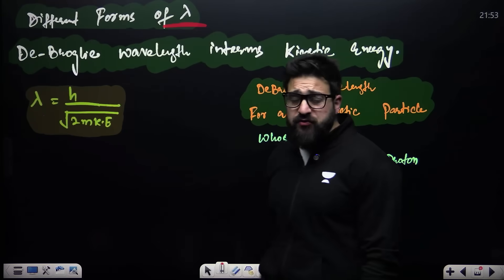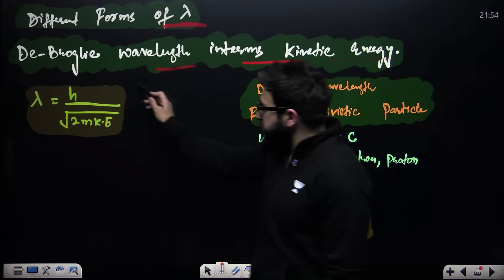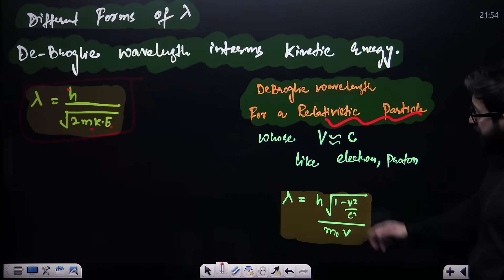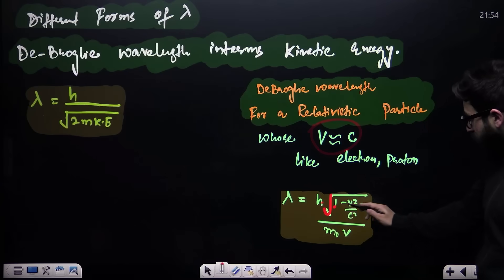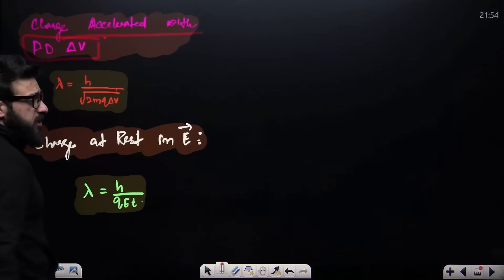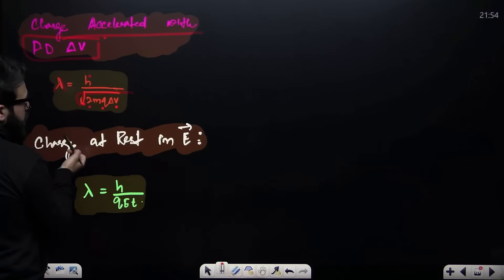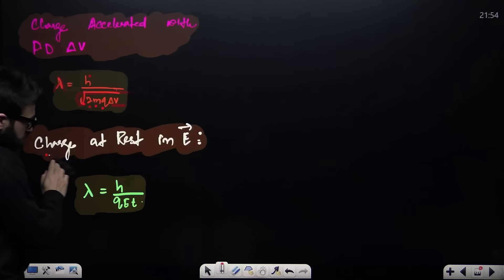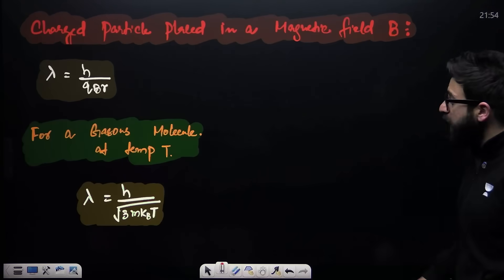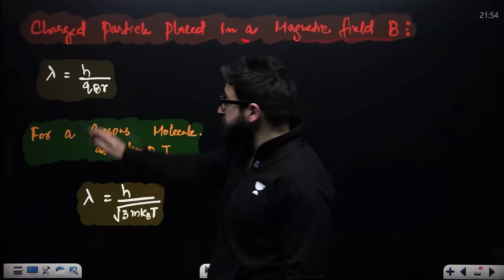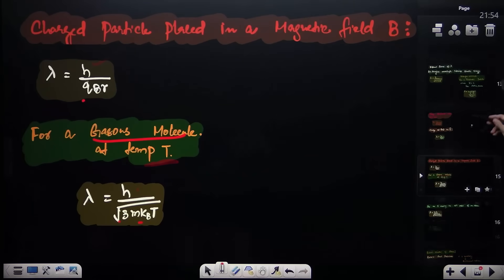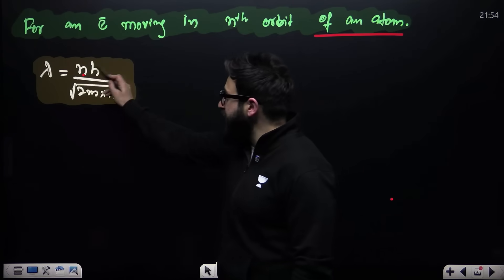Different forms of de Broglie wavelength: in terms of kinetic energy, lambda = h divided by root(2mKE). For a relativistic particle, lambda = h times root(1 − v²/c²) divided by m₀v. For a charged particle accelerated through potential difference ΔV, lambda = h divided by root(2mqΔV). For a charged particle at rest, lambda = h divided by qEt. For a charged particle in a magnetic field, lambda = h divided by qBr. For a gaseous molecule at temperature T, lambda = h divided by root(3m k_B T). For an electron in the nth orbit, lambda = nh divided by 2m times root(13.6).